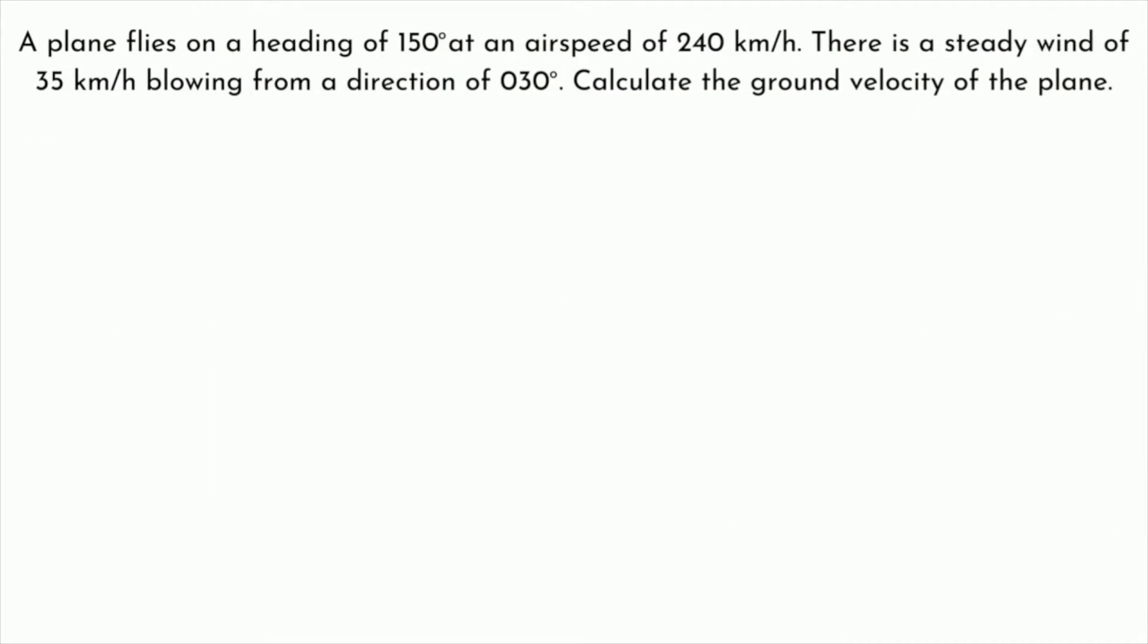We have an example here of a plane flying on a heading of 150 degrees at an airspeed of 240 kilometers per hour. There's a steady wind of 35 kilometers per hour blowing from a direction of 30 degrees. Notice that's a true bearing, and we're being asked to calculate the ground velocity of the plane. Now ground velocity is a new concept, but it's really just a fancy way of asking us to calculate the resultant when we add these two vectors together. So this is really just an application of vector addition, and we're going to see what happens when we add two vectors that have their own magnitude and direction.